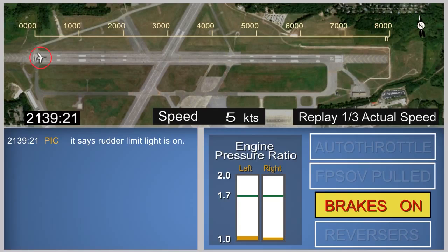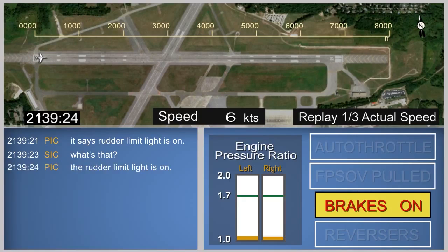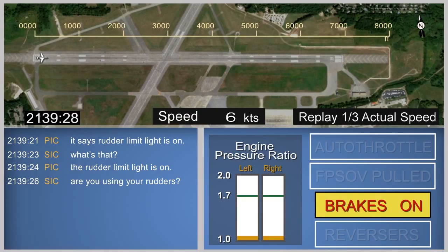The animation begins as the airplane turns from the taxiway onto the runway. While taxiing onto the runway, the flight crew discussed the activation of the rudder limit light. These comments indicated that they had observed a blue rudder limit advisory message consistent with rudder movement with the gust lock still engaged. With the gust lock engaged, the throttle levers should have been restricted from providing an engine pressure ratio capable of enabling the airplane to reach takeoff speed.